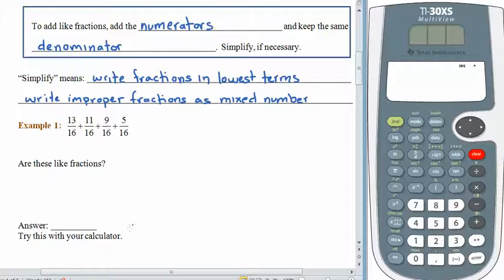So let's move on to an example here. We have 13 16ths plus 11 16ths plus 9 16ths plus 5 16ths. If we were literally going to go by the rules that we wrote down above, we would add all of the numerators. So we have 13 plus 11 plus 9 plus 5. And then we'd keep the same denominator. So this is still a certain number of 16ths. And when we put that all together, we find out that this is 38 16ths, which is improper.